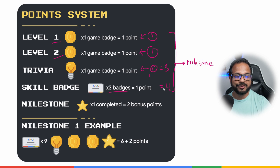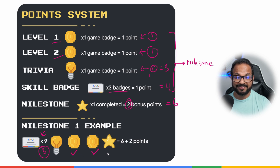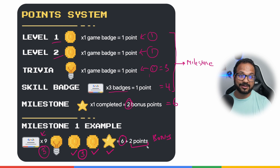Those four points constitute one milestone. When you complete a milestone, you get a bonus of two points, bringing the total to six points. For another example: if you complete nine skill badges, that's three points. Then complete game one, game two, and one trivia — that's three more points — for a total of six points plus a two-point bonus. The more you play, the more you earn; the more skill badges you do, the more points you get. As simple as that.